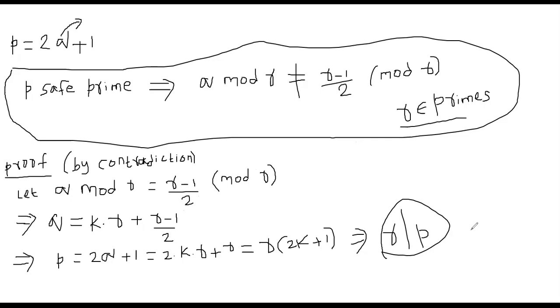And of course, R is not 1 and R is not P. Therefore, we can conclude that our assumption is wrong. The assumption that Q mod R is equal to R minus 1 by 2 is clearly wrong. Therefore, we can say that when P is a safe prime, Q mod R cannot be congruent to R minus 1 by 2 mod R. That is basically the reasoning behind this proof.